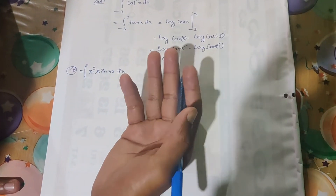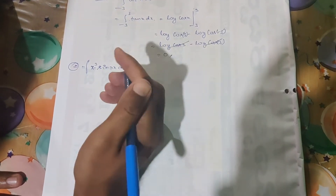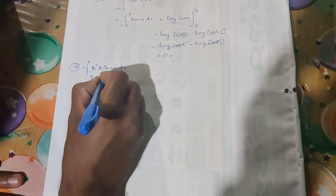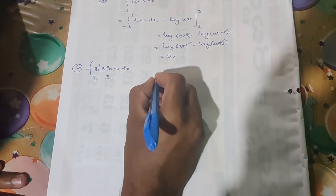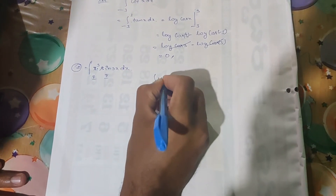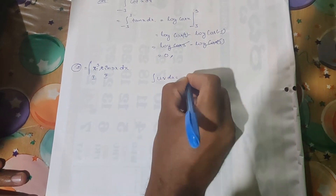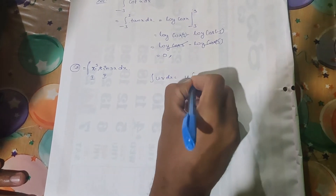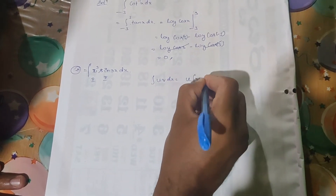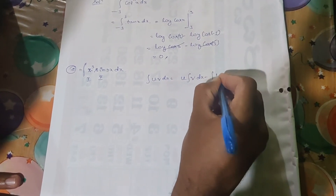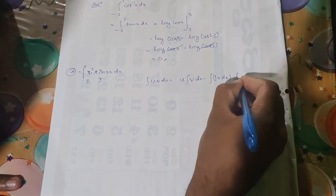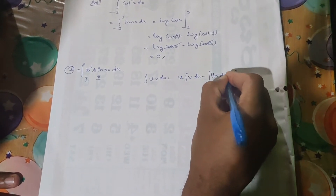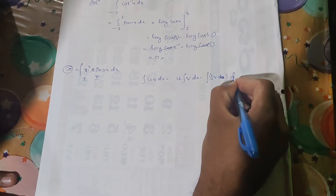Integration by parts — the same process: product of the first function and the second function. You know that the integration of u into v dx is u times the integral of v dx, minus the integral of (integrated v) into the differentiation of u.